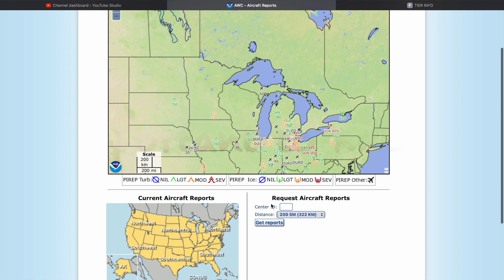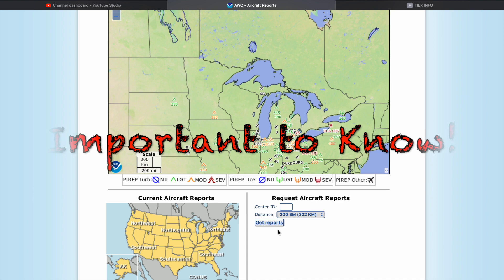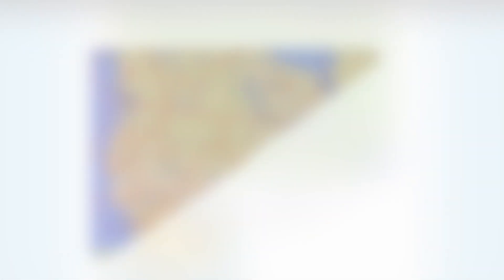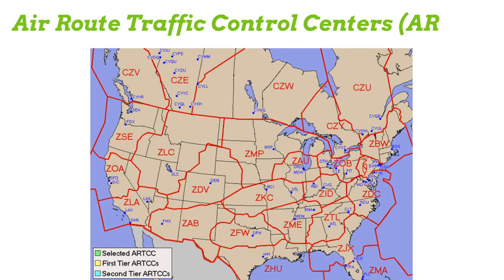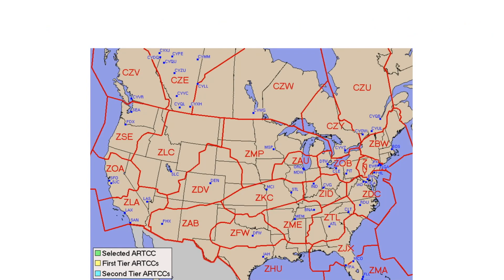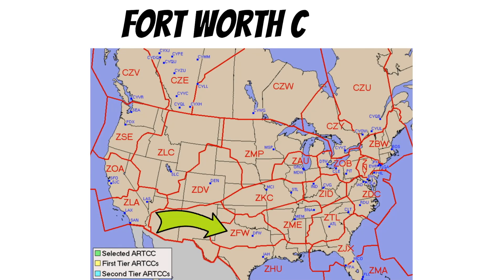This is something a lot of instructors don't teach, but you need to know it — also for checking NOTAMs. This is a map of the Air Route Traffic Control Centers, or ARTCCs. These are the identifier codes for who owns the airspace you're flying in. When you talk to center controllers you refer to them by name — for example, ZME is owned by Memphis Center, and ZFW is owned by Fort Worth Center.